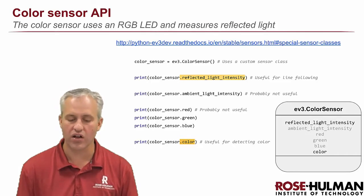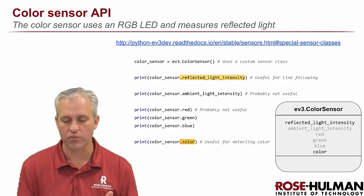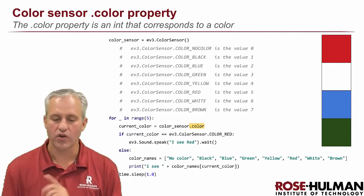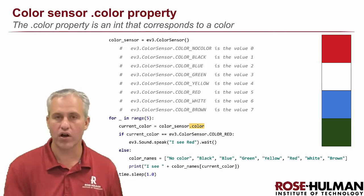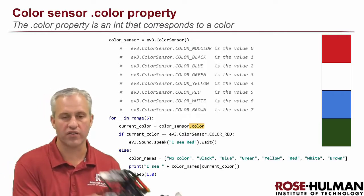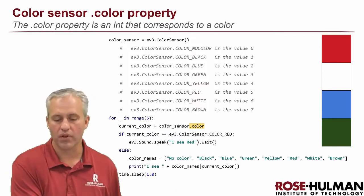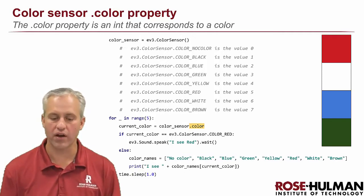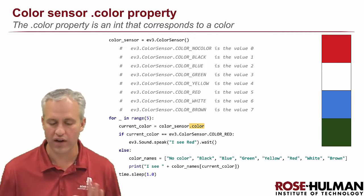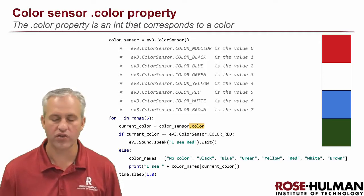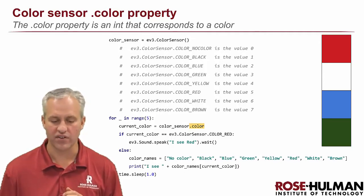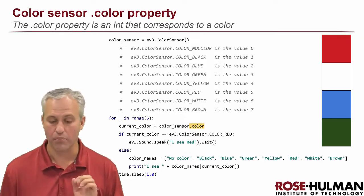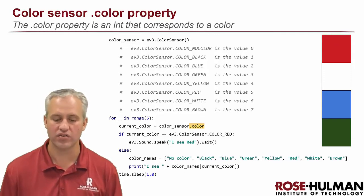It gives you a dot color response, and that dot color can have values zero through seven. So this sensor can identify: no color, black, blue, green, yellow, red, white, or brown. Some colors work better than others — I found that black and white are great, red is also pretty good, but yellow is kind of a disaster. Red, blue, black — those work really well.